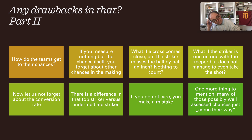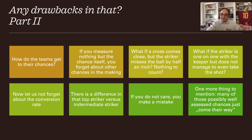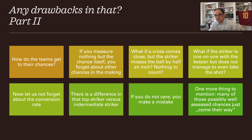Part two of drawbacks: how do the teams get to their chances? If you measure nothing but the chance itself, you forget about other chances in the making. There had been created chances where teams didn't take the shot. What if a cross comes close but the striker misses the ball by half an inch? Nothing to count, no value in the x-goals.